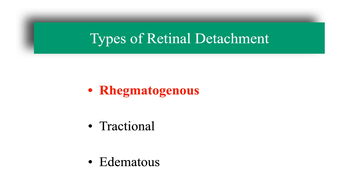First, we are going to make a series of clarifications. Retinal detachment can be of three types: rhegmatogenous, tractional, or exudative. Rhegmatogenous retinal detachment is one that is produced by a break in continuity in the retina, usually a hole or tear. These rules will be useful in rhegmatogenous retinal detachment and should not be used in the other two types.